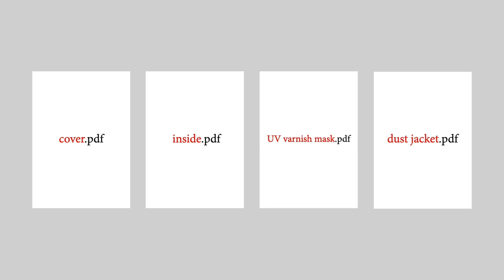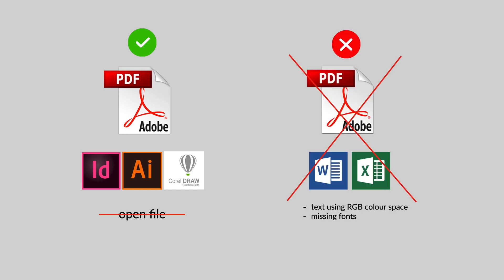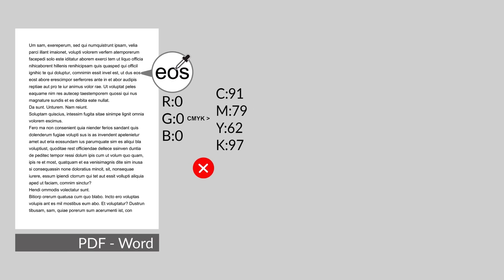All components of your publication, such as the cover, the inside, mask files for UV coating, and the dust jacket, must be clearly identifiable in the file name. For creating PDF files, we recommend software that uses vector graphics, such as Adobe InDesign, Adobe Illustrator, or CorelDraw. We do not accept open file types and PDFs generated using word processing programs like Word or Excel, though in individual cases we might accept such files if agreed with our customer service department. PDF output from Word or Excel saves text using RGB color space, which makes them unsuitable for printing.